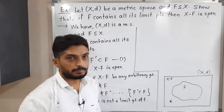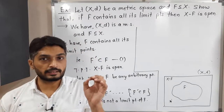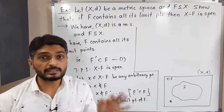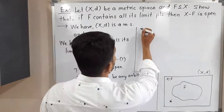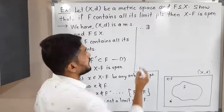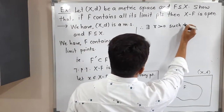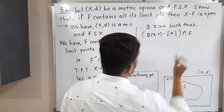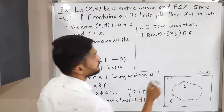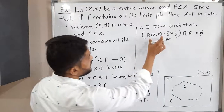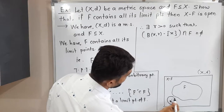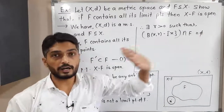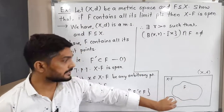The definition of limit point says: B(x, r) minus singleton {x}, intersected with F, is not equal to phi — and this is true for every r greater than zero. But since x is not a limit point, we use the opposite: there exists r greater than zero such that B(x, r) minus {x}, intersection F, is equal to phi.